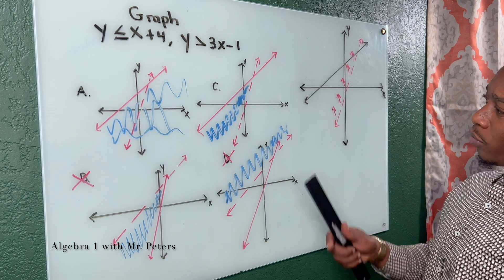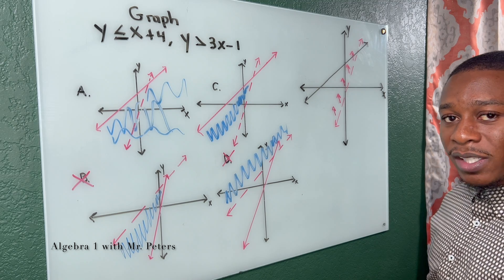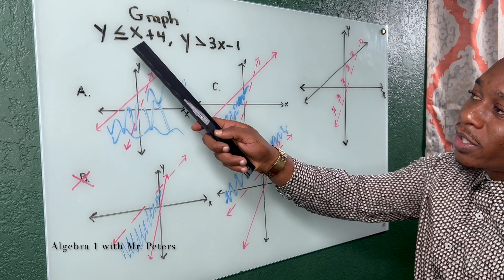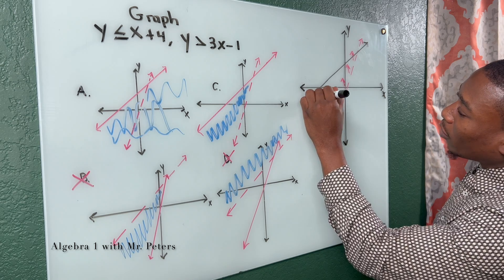So now we're shading for this line, and we know that we're shading under it because Y is less than. If I put 0 in, I know 0 is less than 0 plus 4. So that means I'm going to be shading in this direction.